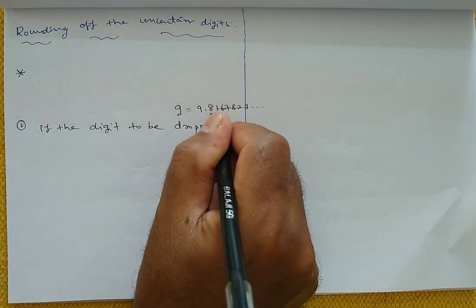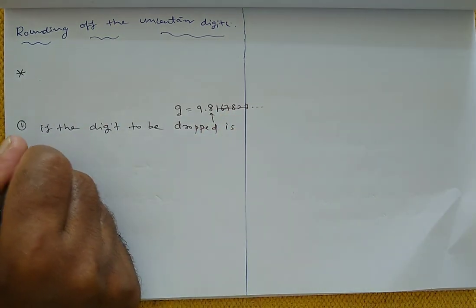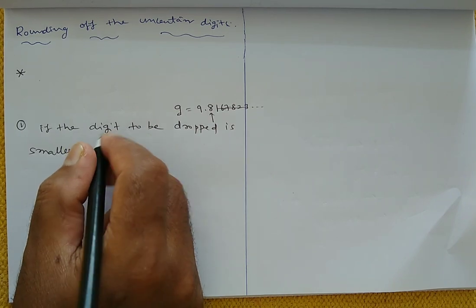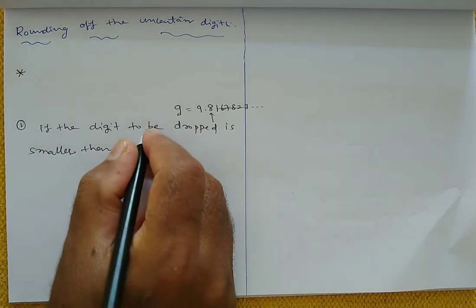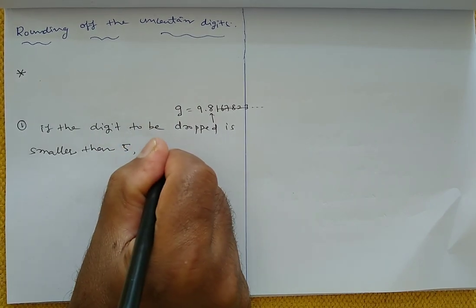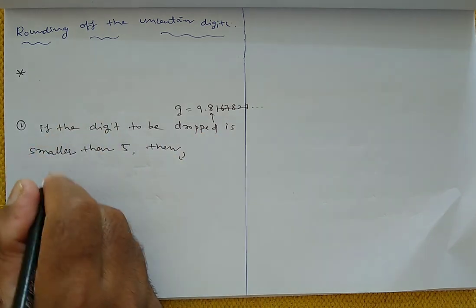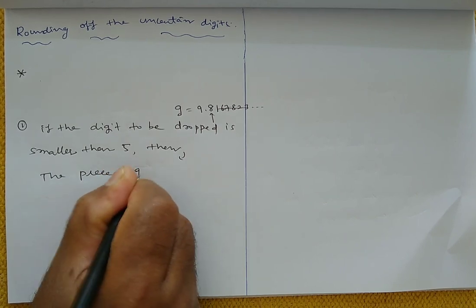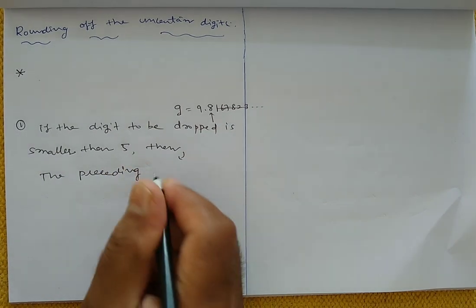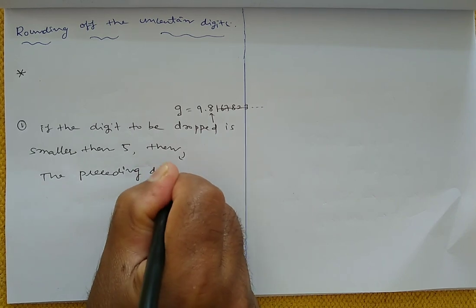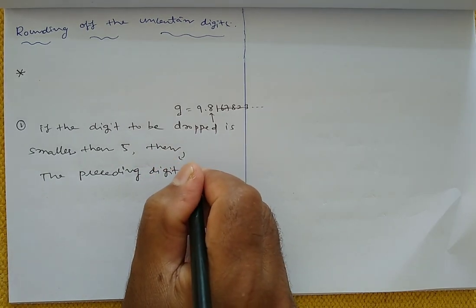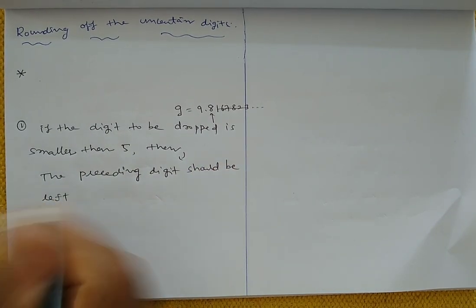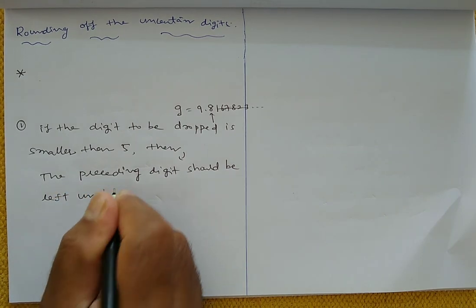The first rule is: if the digit to be dropped is smaller than 5, then the preceding digit should be left unchanged — that means we won't change the number.